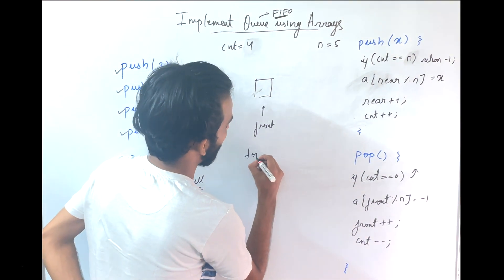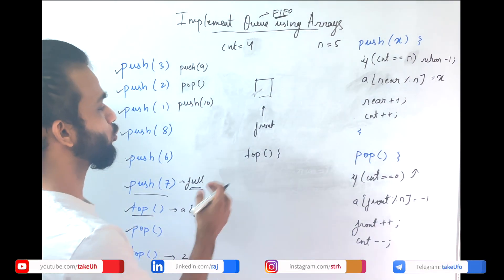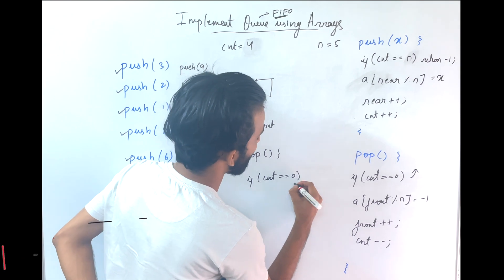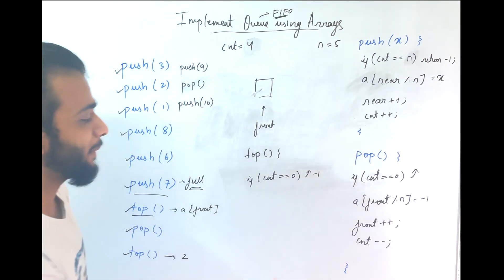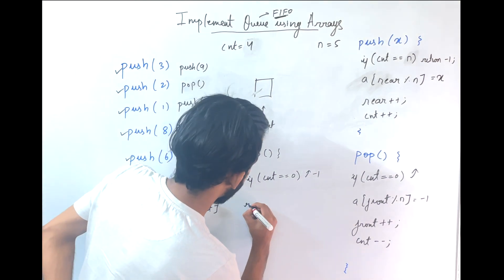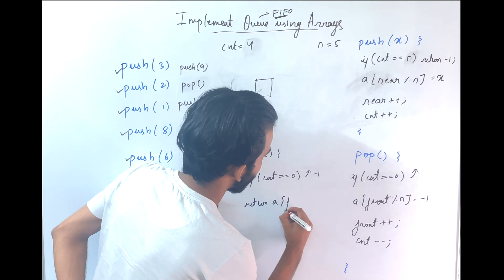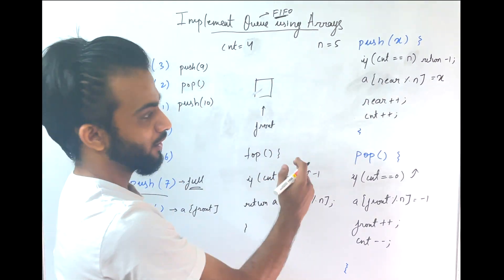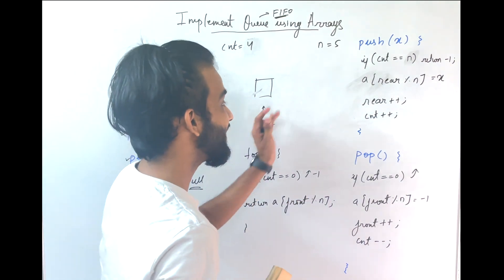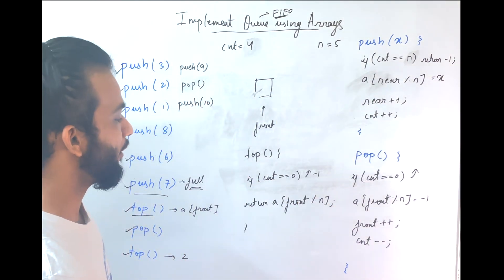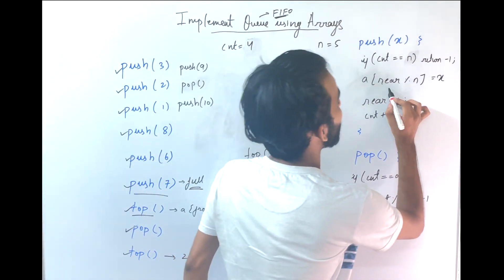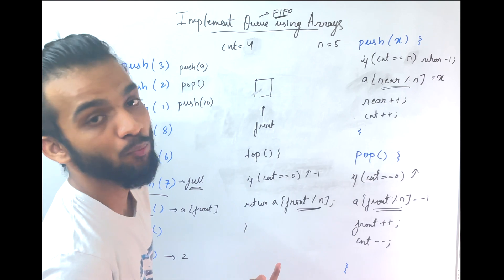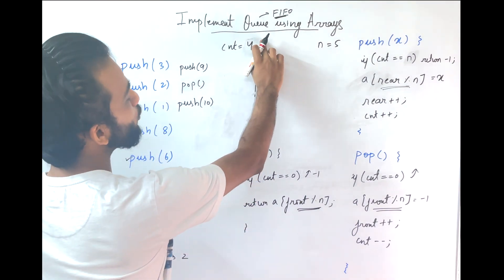For the top function: if count equals 0, return -1 stating there is no top element. Otherwise return a[front % n]. Always use modulo n because the array is circular — both rear and front can exceed the array bounds. Make sure to use modulo n everywhere you access the array.